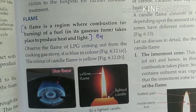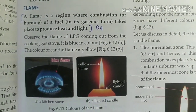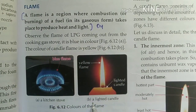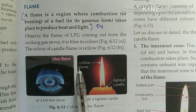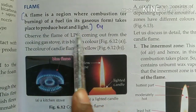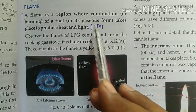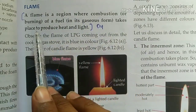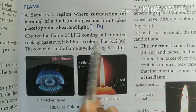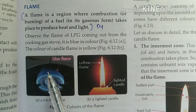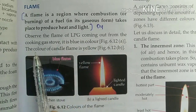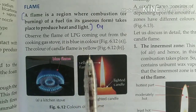The next topic is flame. A flame is a region where combustion of fuel takes place to produce heat and light. Observe the flame of LPG coming out from a cooking gas stove — it is blue in color. The color of a candle flame is yellow.